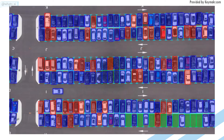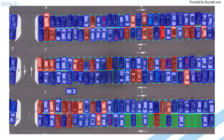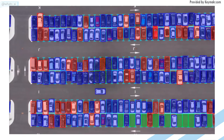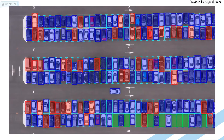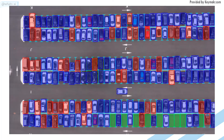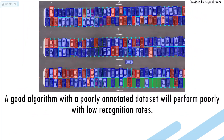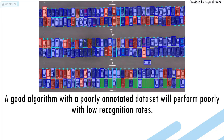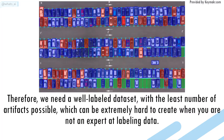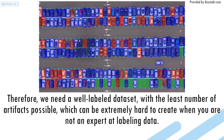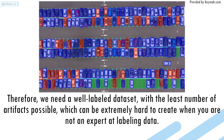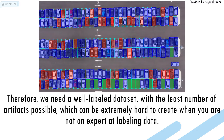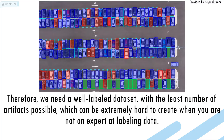Just look at the fine details and attention required to create such a great dataset from satellite photos and GPS data, annotating each element with the highest precision possible. A good algorithm with a poorly annotated dataset will perform poorly with low recognition rates. Therefore, we need a well-labeled dataset with the least number of artifacts possible, which can be extremely hard to create when you are not an expert at labeling data.